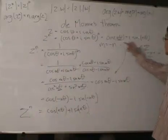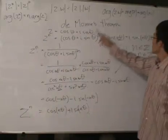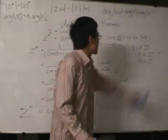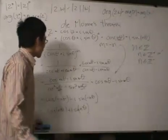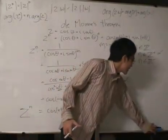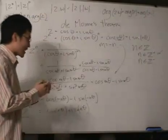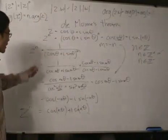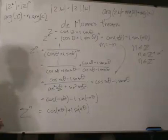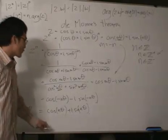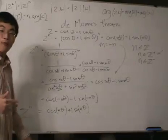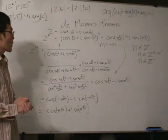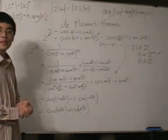That means De Moivre's theorem is true for n in the set of integers — both positive and negative. I stumbled a bit on a few parts, but I hope this is as complete a proof as I can give you. For a full review, you can go ahead and see what I have on my website.